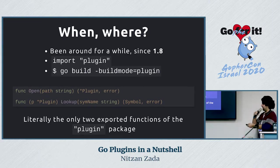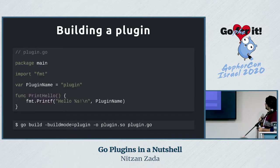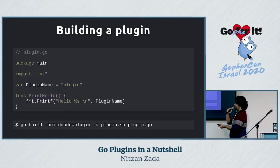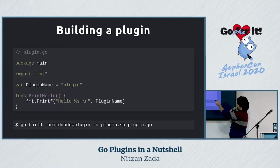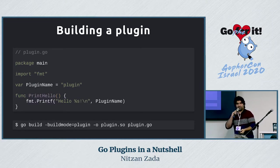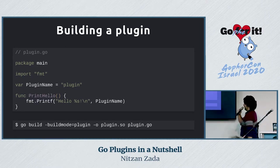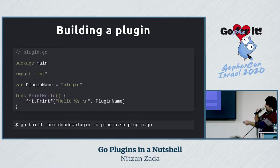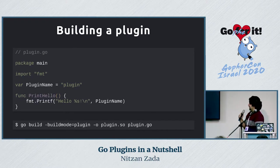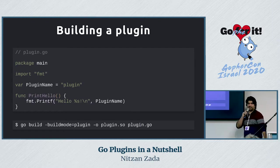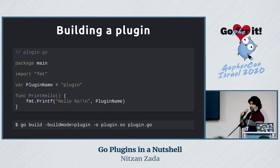So what building a Go plugin lets me do is it lets me compile a Go file that looks like this. Notice that it doesn't have any main function, because it has no entry point - it's supposed to be operated from outside, loaded at runtime. So let's say I have this file plugin.go that has the PrintHello function, and I build it with this command: go build -buildmode=plugin. The -o flag means it will output plugin.so, a shared object.